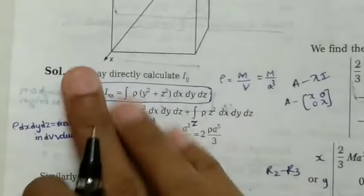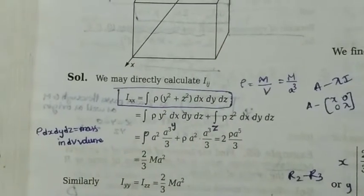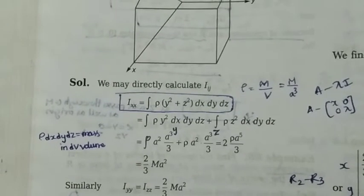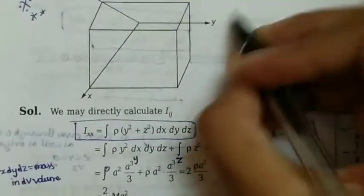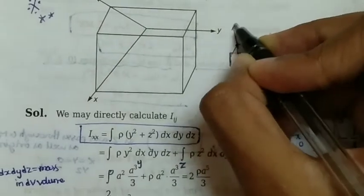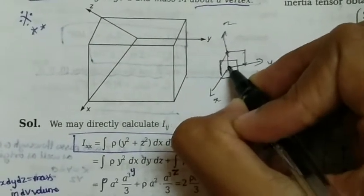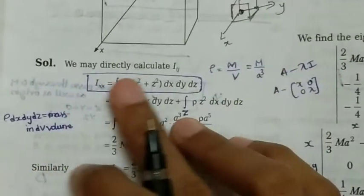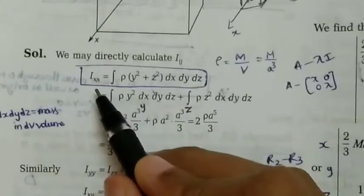We may directly write I_ij. The formula for moment of inertia I is nothing but summation mr², where m is the mass at a particular point and r is the distance of that point from the reference point — here the vertex of the cube. So this is the cube with all three axes, and about this vertex point we need to find the inertia tensor. The formula is I_xx equals the integration of rho times (y² + z²) dx dy dz.